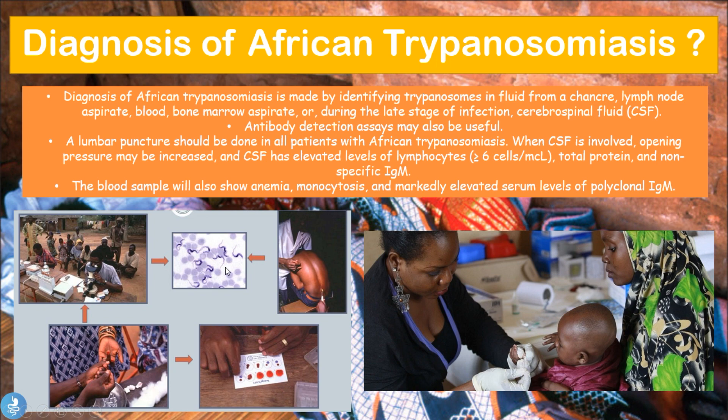A lumbar puncture should be performed in patients with African trypanosomiasis when CSF involvement is suspected, typically in chronic cases. The opening pressure may be increased, and the CSF will show elevated lymphocytes — more than six cells per millicubic liter. Total proteins and nonspecific IgMs will also be increased. A blood sample will show anemia, monocytosis, and markedly elevated serum polyclonal IgMs.